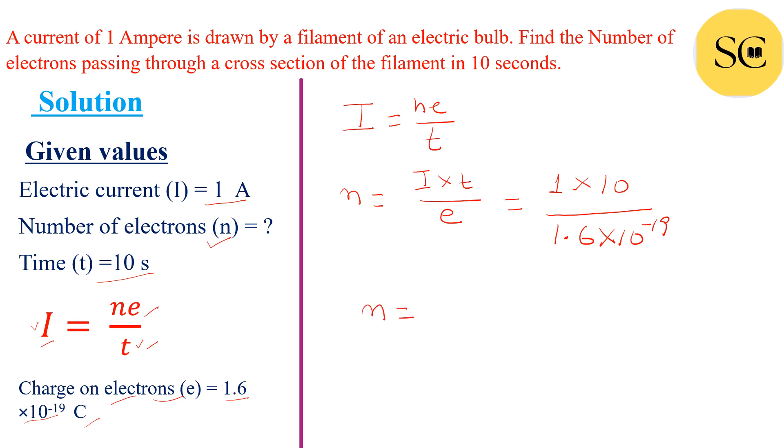After dividing, we will have the value 6.25 upon 10^-19. Now we can move this value.